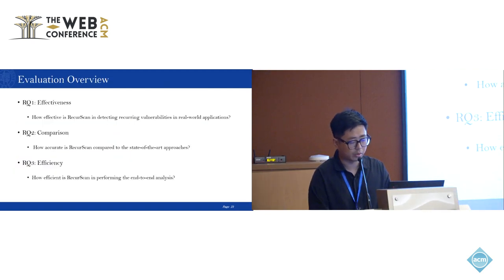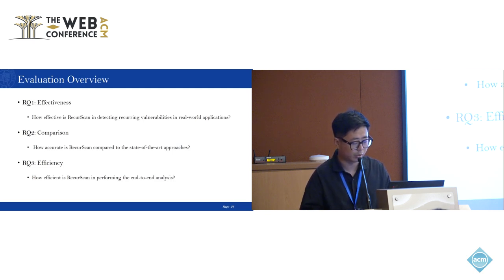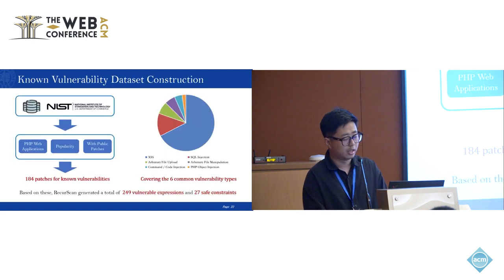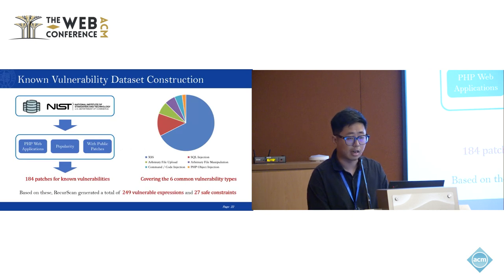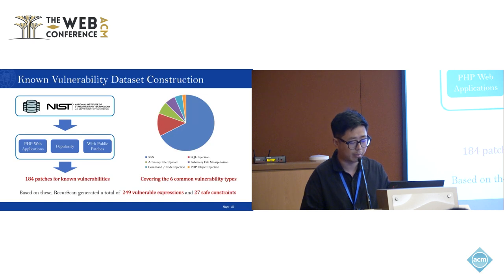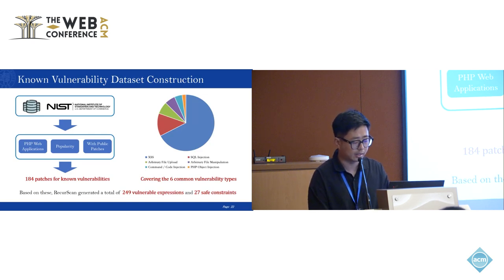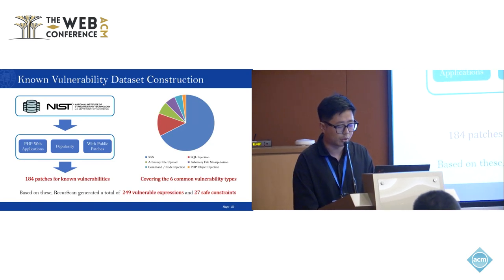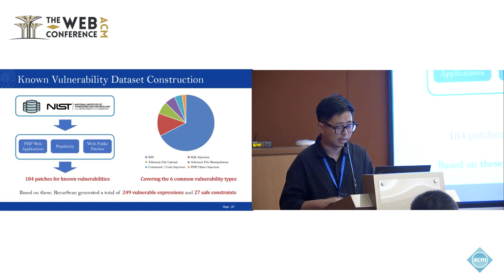In the evaluation, we set three research questions to evaluate Rikerscan. The first question is how effective is Rikerscan in detecting recurring vulnerabilities in real-world applications. The second question is how accurate is Rikerscan compared to the state-of-the-art approach. The third question is how efficient is Rikerscan in performing end-to-end analysis. To answer these questions, we collected known vulnerabilities from the NVD according to three requirements: the vulnerabilities should occur in PHP web applications, the applications should have more than 100 stars on GitHub, and the vulnerabilities should have publicly available security patches. As a result, we collected 184 known vulnerabilities with their security patches, covering six common vulnerability types. Based on this, Rikerscan generated 249 vulnerable data flow expressions and extracted 27 safe control flow constraints.